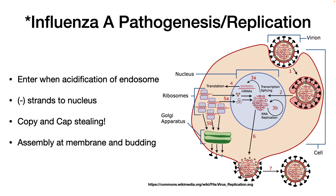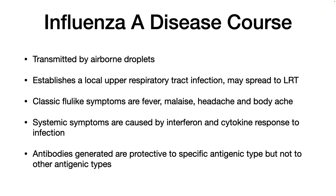The really interesting thing about this replication cycle is the cap-snatching mechanism. Transmission is by airborne droplets — people sneeze and cough, bringing droplets into the air that find other victims. The influenza virus can be taken up by surfaces, but it doesn't live as long on surfaces as the rhinovirus does. Influenza will establish a local upper respiratory tract infection. In rare cases it may spread to the lower respiratory tract, where it is more serious. You get classic flu-like symptoms: fever, malaise, headache, and body aches, with possible cough and stuffiness. What distinguishes it from a cold is the fever and the intense body aches.